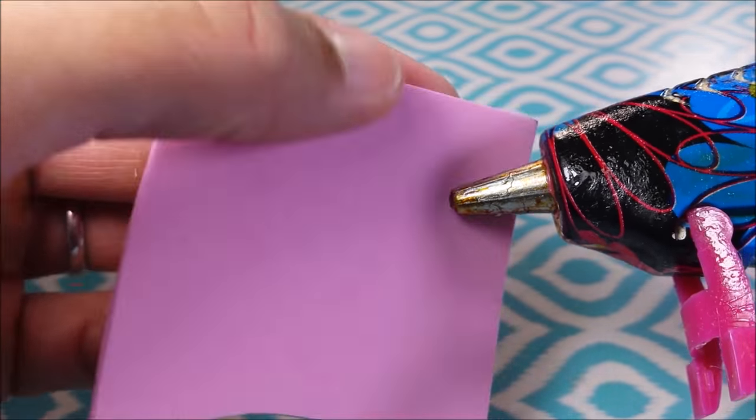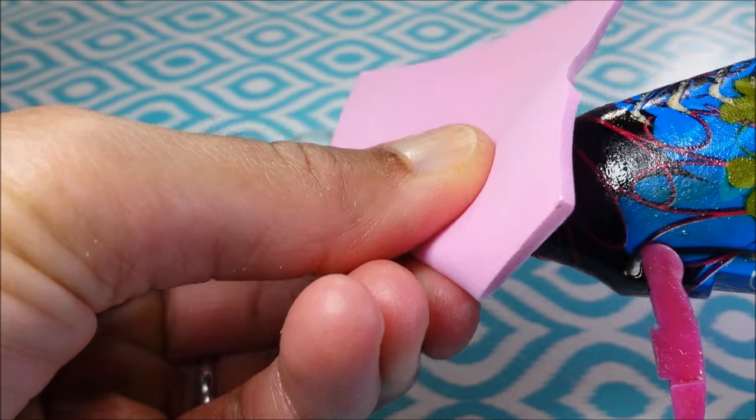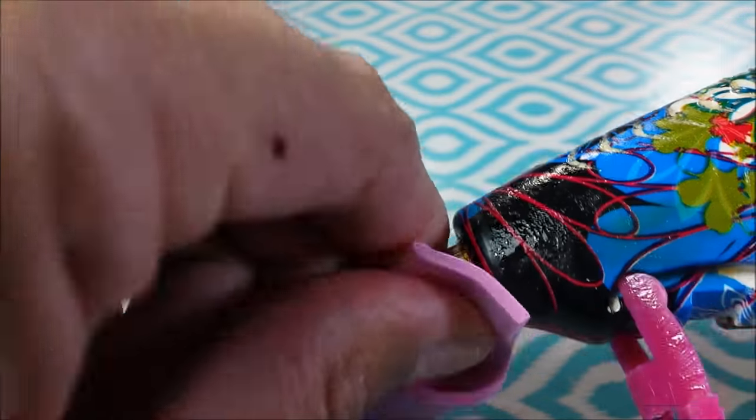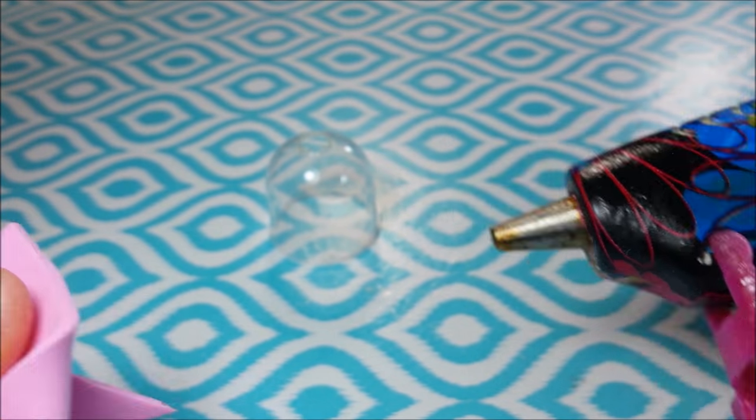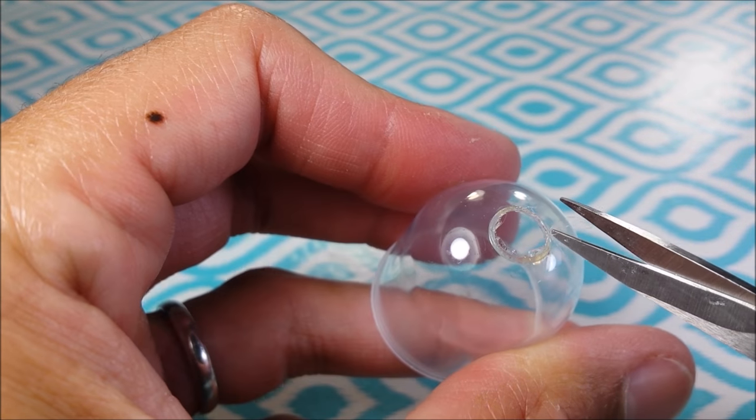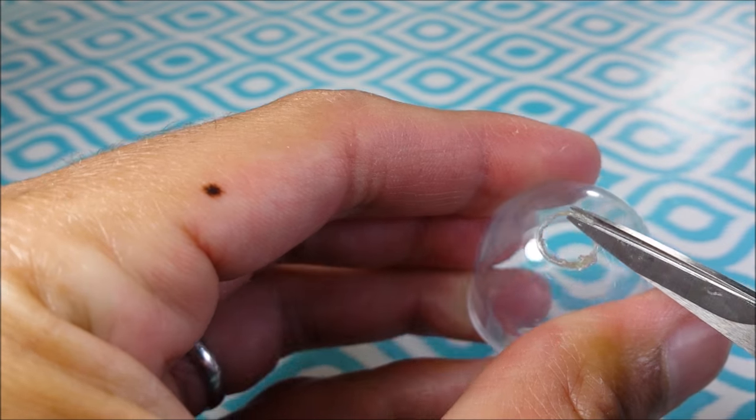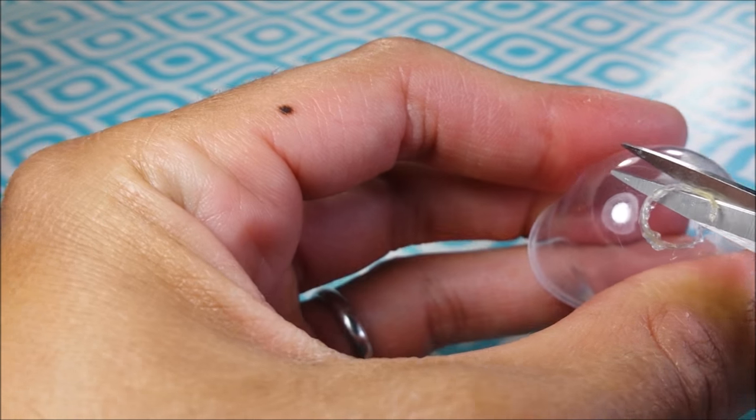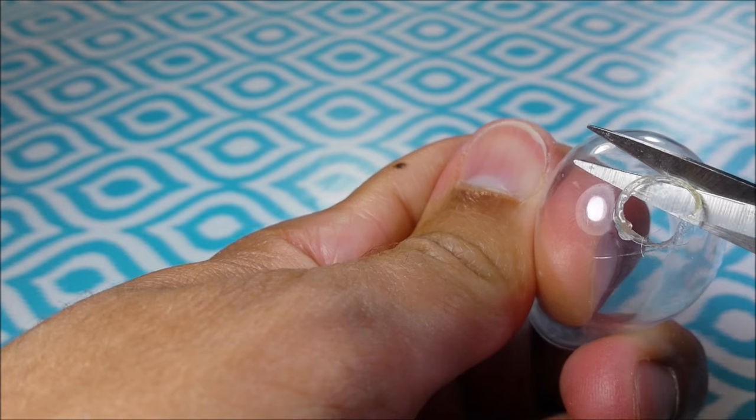By the way, you can always use craft foam paper to clean off any excess plastic from your gun. Then using my small scissors, I expand my hole.